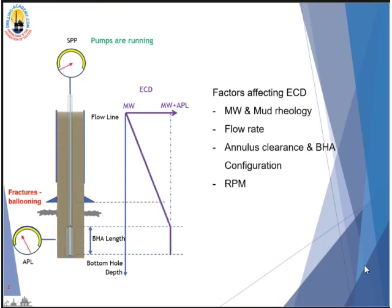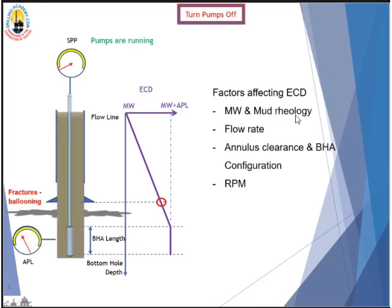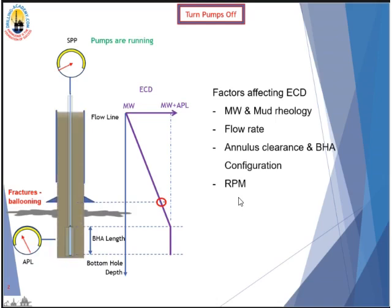What are the factors affecting ECD? As I said, ECD equates mud weight plus AFL — also called APL or annular pressure loss. Mud weight affects ECD for sure. Mud viscosity also affects it. The flow rate we use to pump: the higher the flow rate, the higher the ECD and AFL. And the annulus clearance between the BHA and the wellbore — the tighter the annulus, the higher the ECD. So BHA configuration and annulus clearance affect ECD. And RPM — the rotation of your drill string also affects ECD. Higher RPM — higher or lower ECD? Take your guess; you can drop me an email to discuss that one.